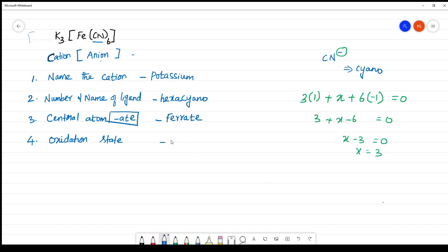So what is the oxidation state? Oxidation state should be written in the roman numeral. Oxidation state is 3.